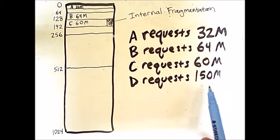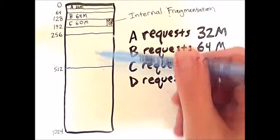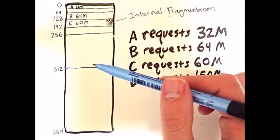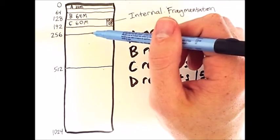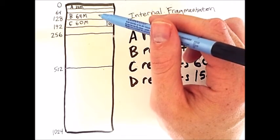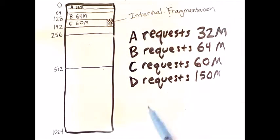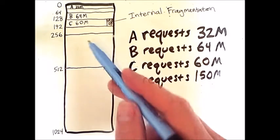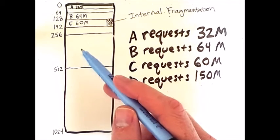Our next request is for 150 megabytes. So starting from 512, we go up, we have two regions of size 256. The top portion is filled with other processes, so we instead will put process D in the lower portion, and half of 256 is 128.